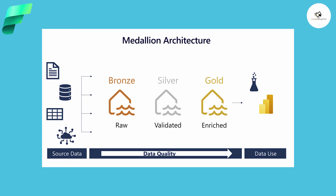In the bronze layer you are going to have your raw data, in the silver layer your validated data, and in the gold layer your enriched data — each representing higher data quality levels. Some people also call it a multi-hop architecture, meaning that data can move between layers as needed.